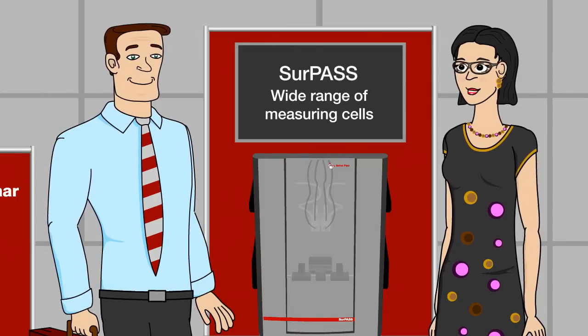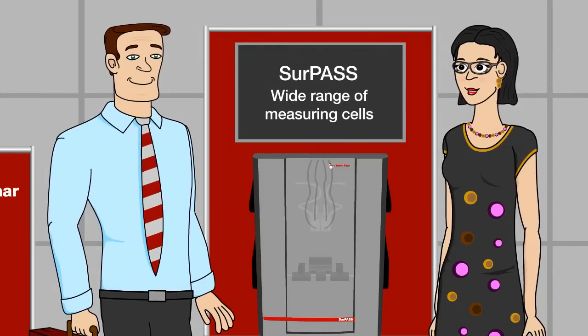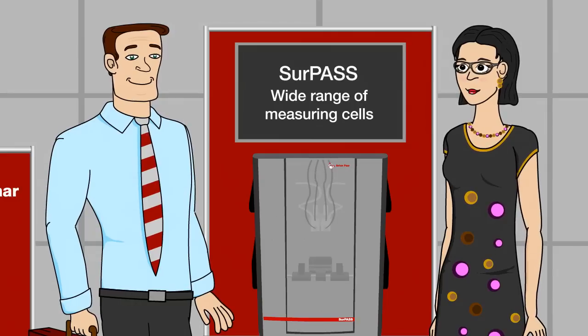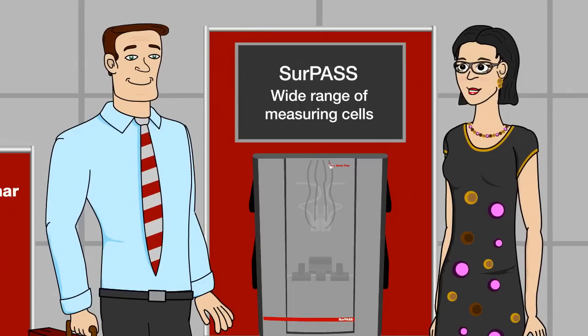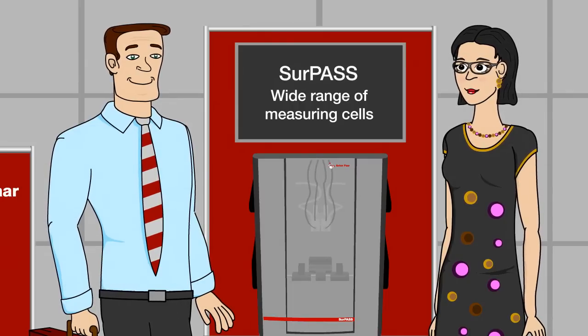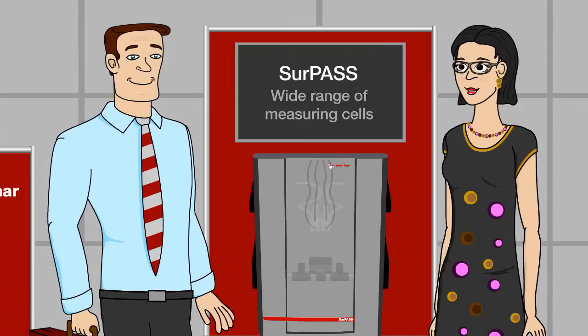Another plus is SURPASS's wide range of measuring cells. You can measure planar samples, that's rather common. But SURPASS is also open to many more sample geometries. You can measure fibers, medicinal tubes, powders, large disks, and much more. SURPASS is the only instrument that gives you that kind of flexibility.